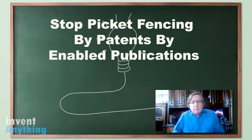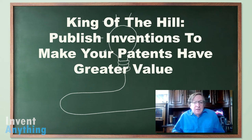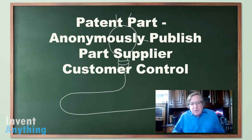Let's talk about stop picket fencing. One of the things in patents is that many companies competitively try to picket fence around your patent, giving you less room to expand your inventions. Enabled publications will stop picket fencing. Another strategy we call King of the Hill: you publish inventions to make your patents have greater value. There are also times where you'd like to make sure your suppliers or customers don't get patents in your domain — by publishing anonymously, your customer or supplier can't get those patents. It's a great way of doing it.